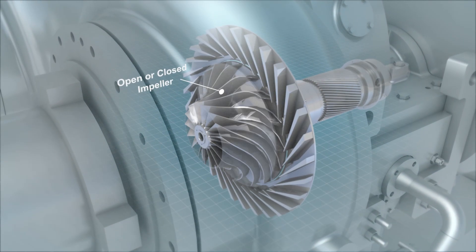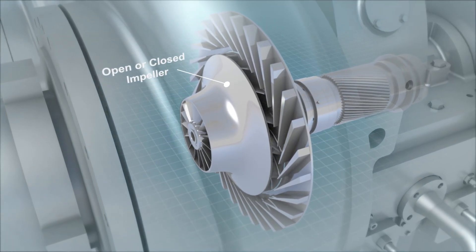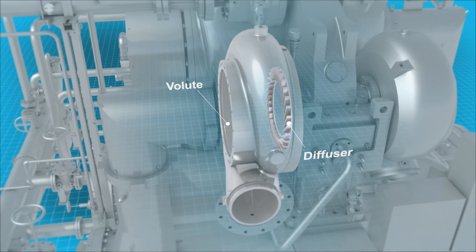Our impellers, available in open or closed configurations, impart kinetic energy to the gas. This is turned into pressure in the diffuser, and then the volute.